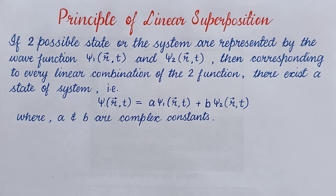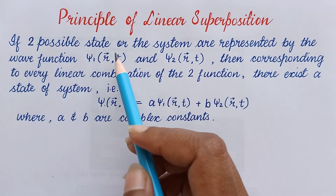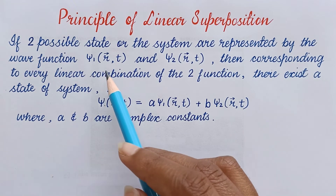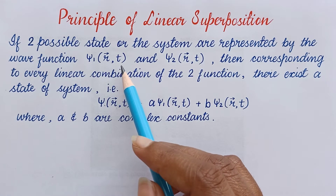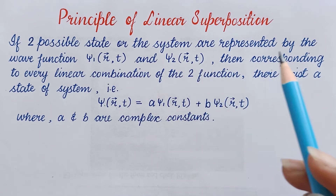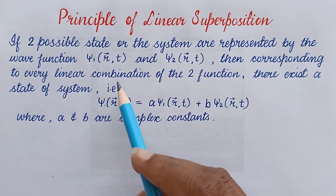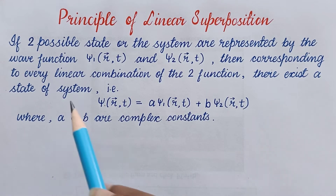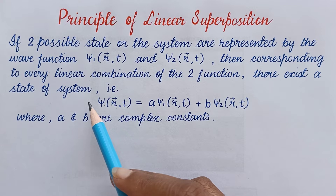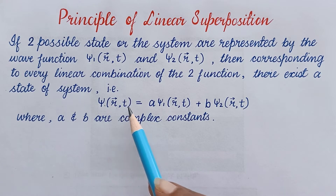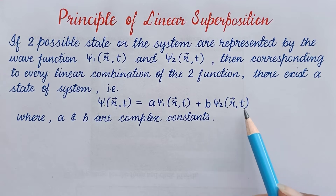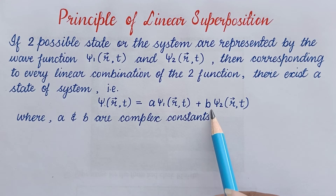What does it say? If two possible states of the system are represented by the wave functions ψ₁(r,t) and ψ₂(r,t), then corresponding to every linear combination of the two functions there exists a state of the system: ψ(r,t) = A·ψ₁(r,t) + B·ψ₂(r,t), where A and B are complex constants.